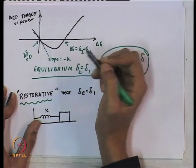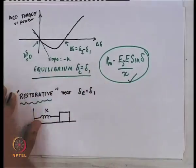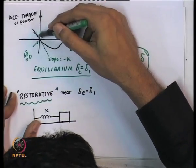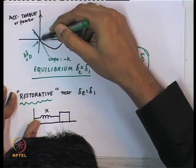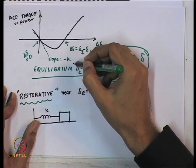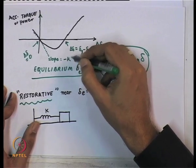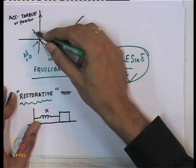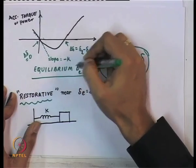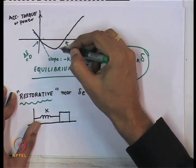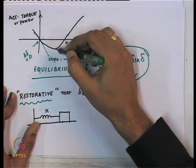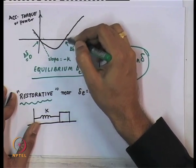So for small disturbances we can treat the torque as restorative, but for large disturbances it is not correct to assume it is always restorative. In fact, when we did the linearized analysis, what we effectively took was the slope of this particular curve at the equilibrium point. This slope was the k we talked about. For small disturbances, you can use the straight line with slope minus k, but for large disturbances the accelerating torque may not be restoring after some point.